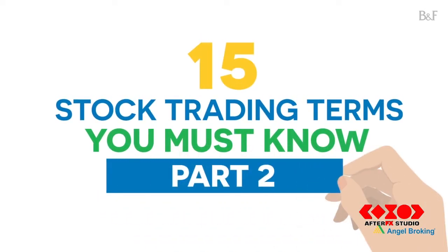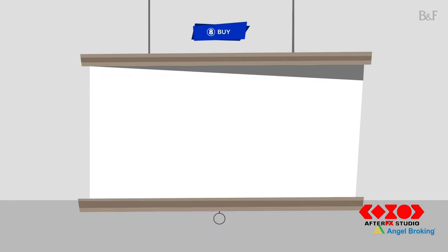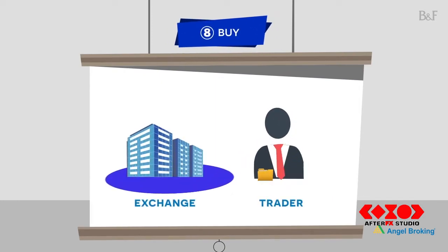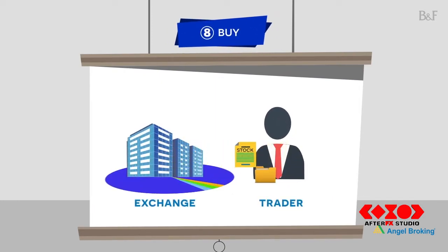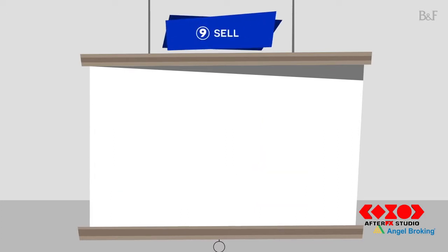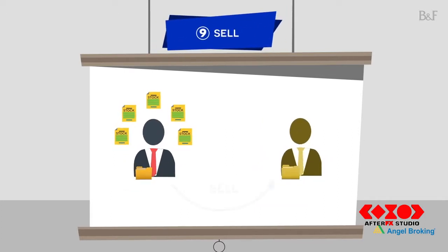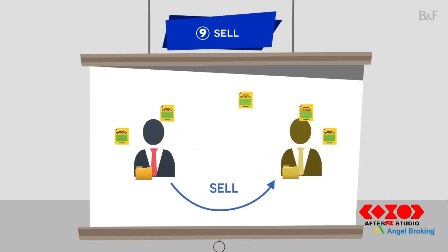15 Key Stock Trading Terms You Must Know, Part 2. 8. Buy: To buy means to take a position or to buy shares in a company. 9. Sell: Conversely means getting rid of the shares purchased.